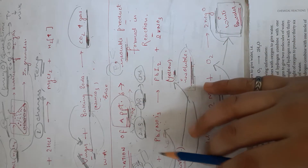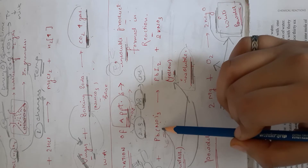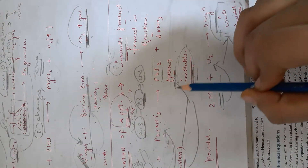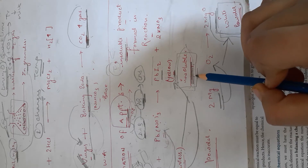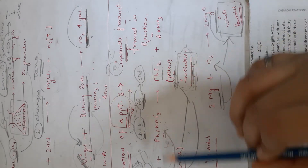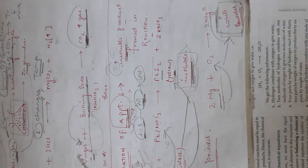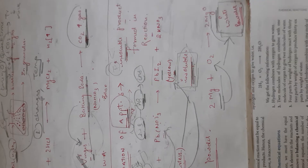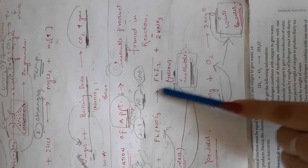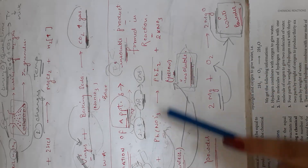Precipitate formation means that when two reactants react, a product is formed with some new properties — like being insoluble. So we know that some type of reaction has taken place between the reactants, called a chemical reaction. It is irreversible because the precipitate is made from two compounds that cannot be easily separated back.